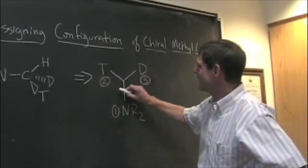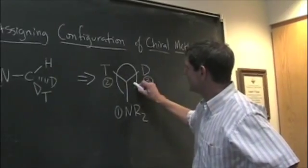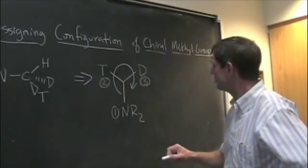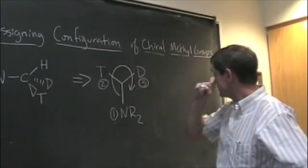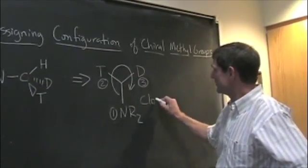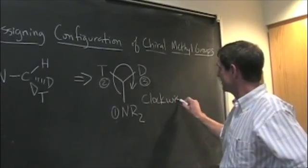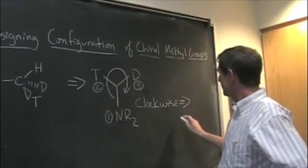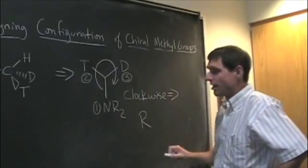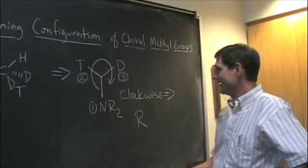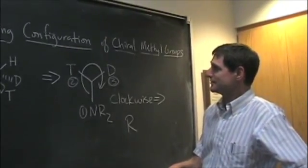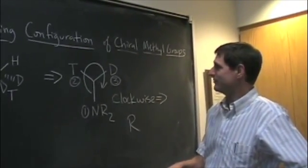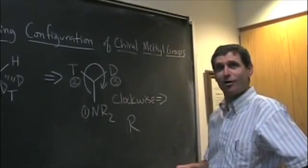And then we chase out from high to low. From high to low, we go. And we're chasing out a clockwise motion. So this group should be R. We double-check things, and I think we've done it right. I think this is an R methyl group. Thank you very much.